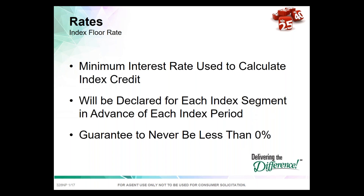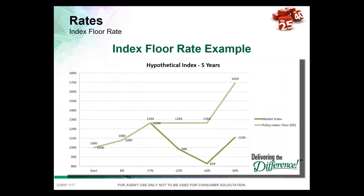Let's look at our theoretical index performance with a floor, ignoring par rates, cap rates, and spread — just looking at 100% participation rate with no cap, no spread, just the floor. If the index goes up 8%, the client gets 8%. If it goes up 17%, the client gets 17%. If it goes down 22% and down 16%, the client gets zero — they stay where they are. When it goes up 34%, the client gets 34%. This would be an awesome design if we only had floors and no other upside limitations.